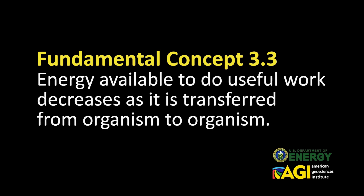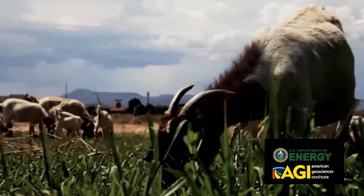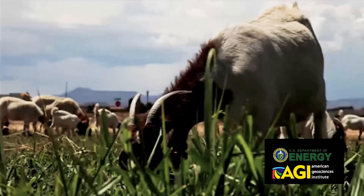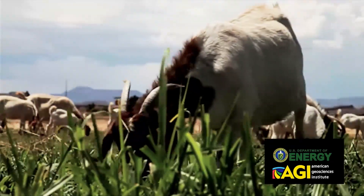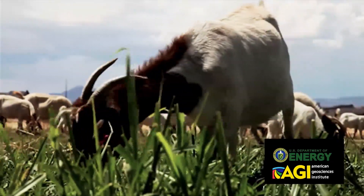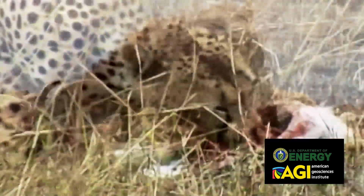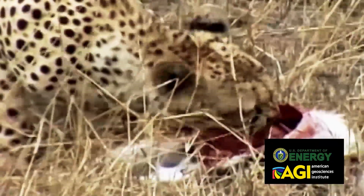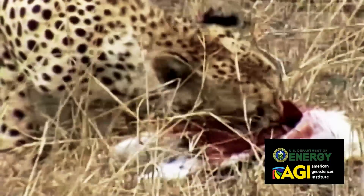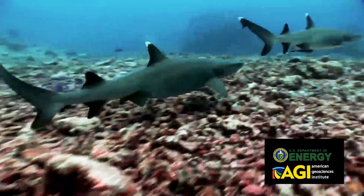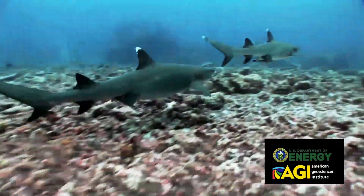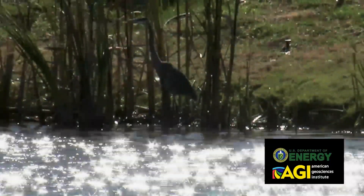Energy available to do useful work decreases as it is transferred from organism to organism. The chemical elements that make up the molecules of living things pass through food chains and are combined and recombined in different ways.